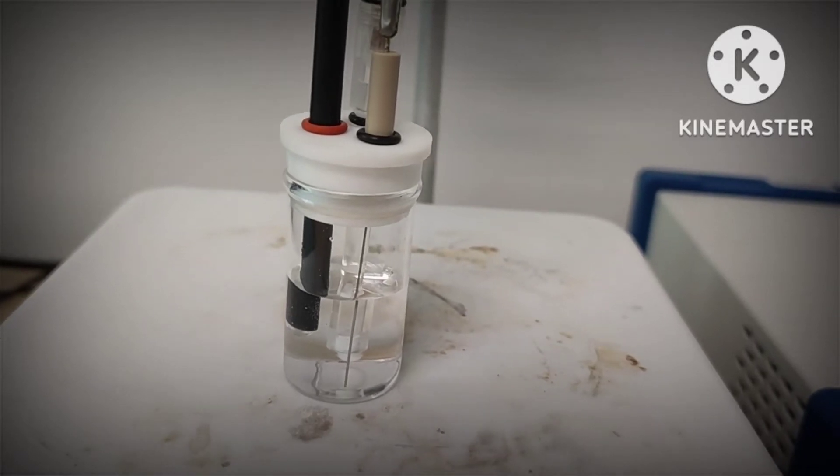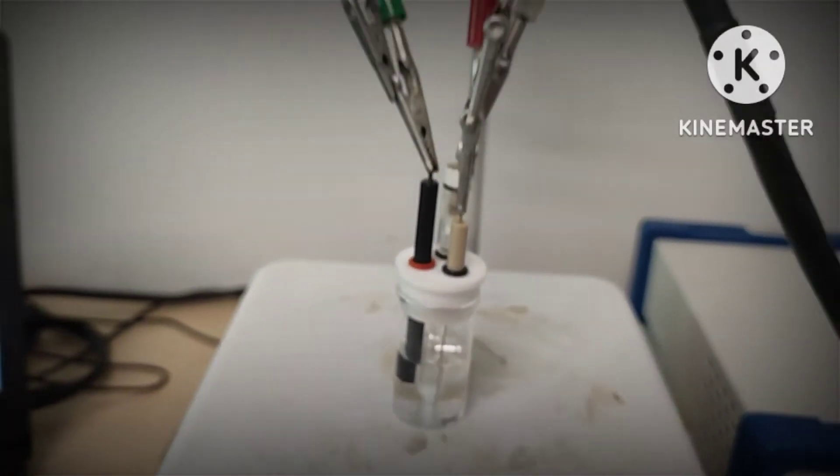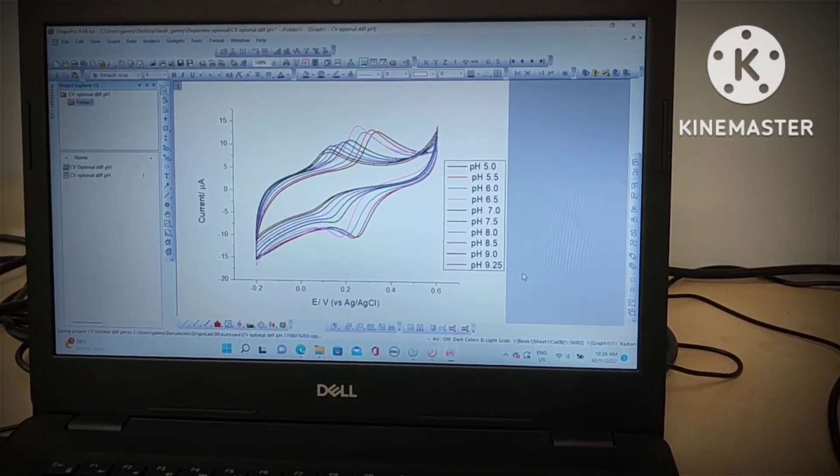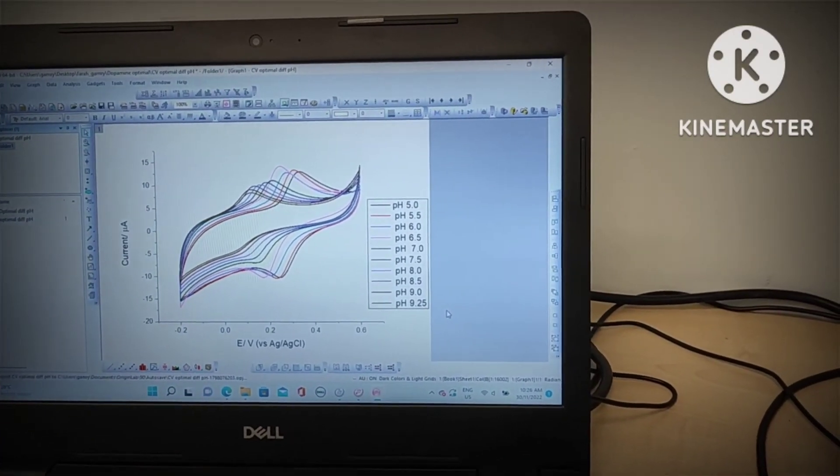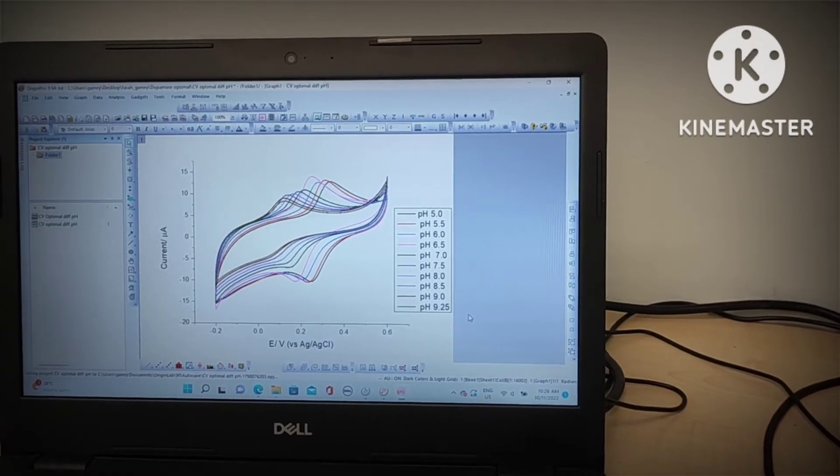Then you can do sensor analysis. As you can see here, she studies the difference in pH—which pH is suitable to detect the analyte, in this case to detect dopamine.